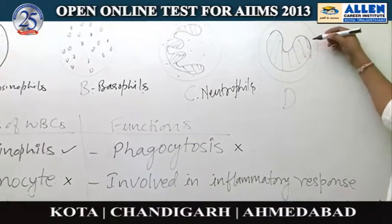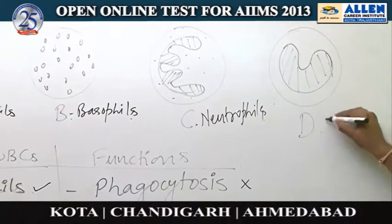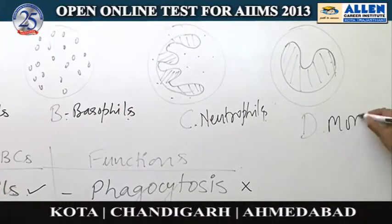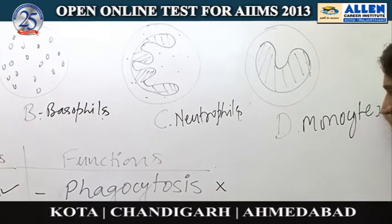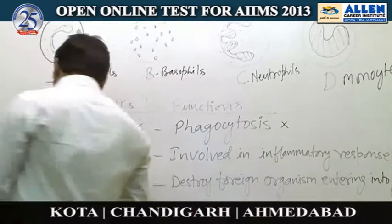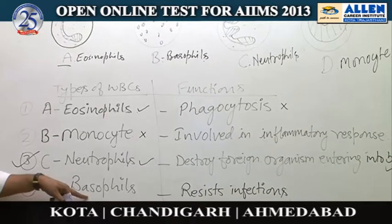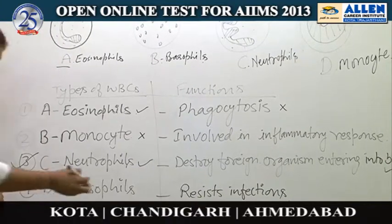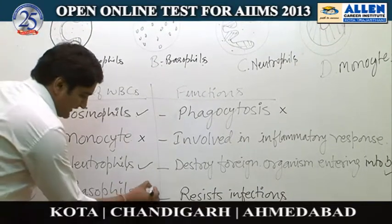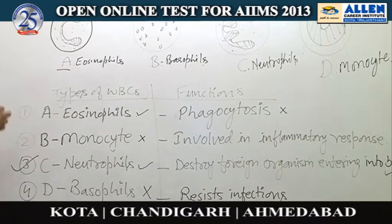Let's check the last option. This cell contains a kidney-shaped nucleus, and a kidney-shaped nucleus is present in monocytes. But in the last option it is written that D is basophils — so this cell is not identified correctly. Therefore, the right answer is the third option.